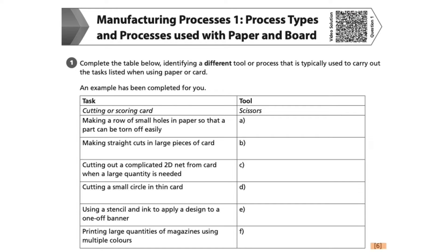Let's take a look at the example to begin. We can see that the task for the example is cutting or scoring card, and the tool which has been named is scissors. Our answer is just asking us to identify the tool or process — we do not need to talk about how it is used. It is merely identification of the tool or process. We must, however, ensure that the tool or process we write is typical.